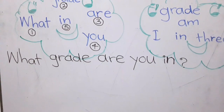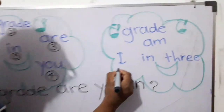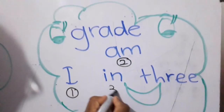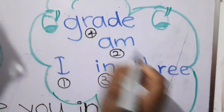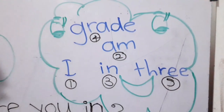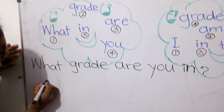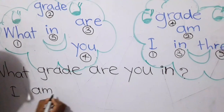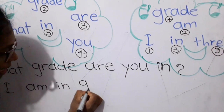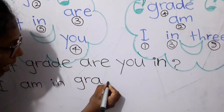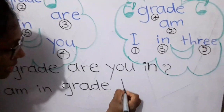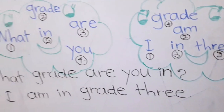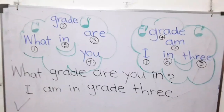Now the answer. First word: I. Second one: am. In. Grade. Three. Correct. I'm going to write: I — am — in — grade — three. You are correct. Good children.